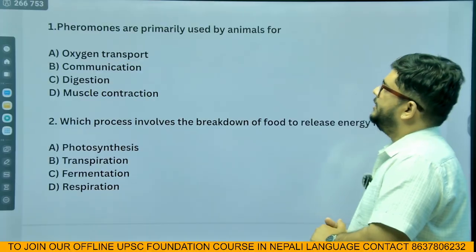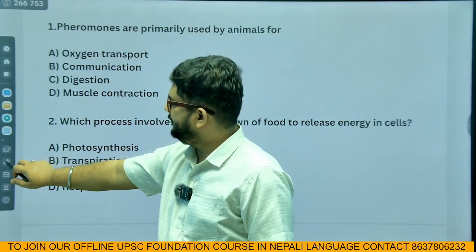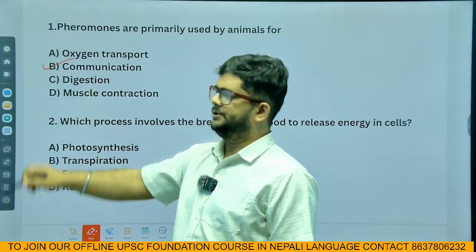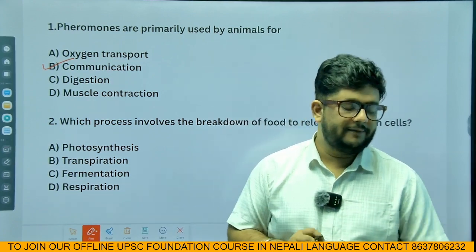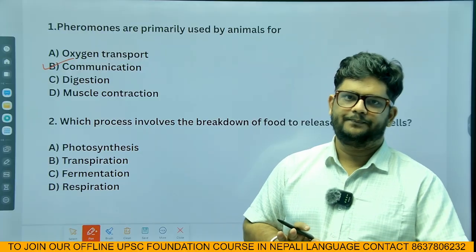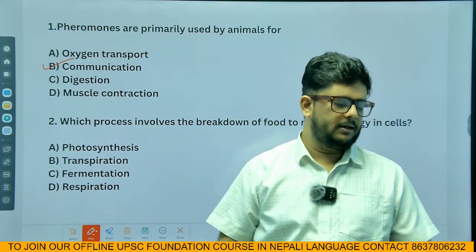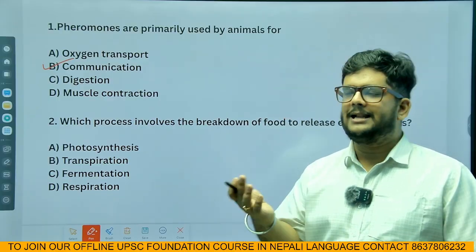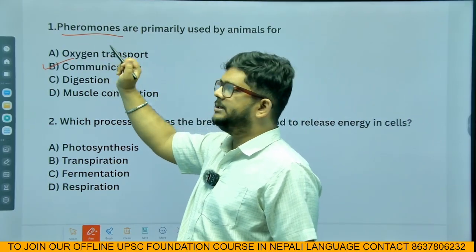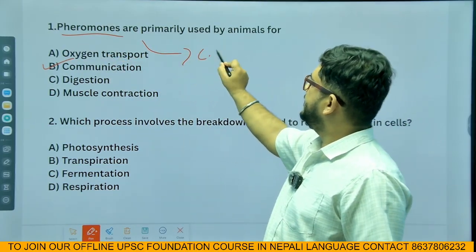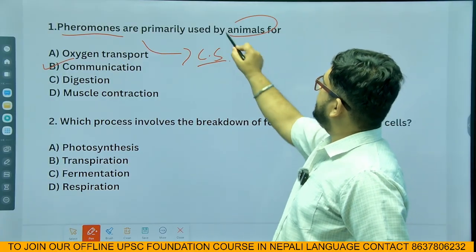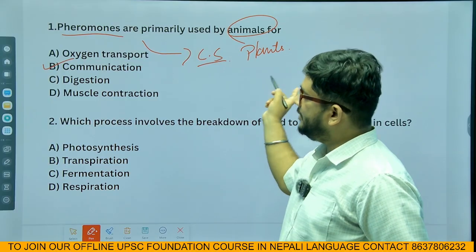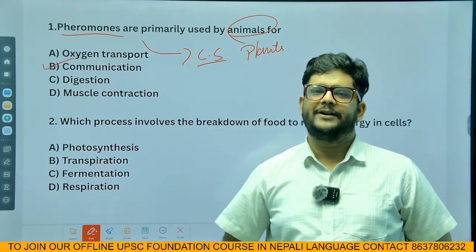Pheromones are primarily used by animals for communication. Let's understand what exactly pheromones are. Pheromones are a chemical substance used by both plants as well as animals for communication. That's the definition of it.